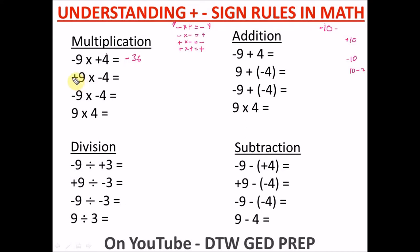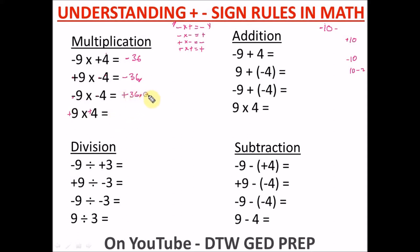So for minus 9 times positive 4: negative times positive gives us a negative, so the answer is negative 36. For positive 9 times negative 4: positive times negative gives a negative, so the answer is negative 36. For negative 9 times negative 4: negative times negative gives a positive, so the answer is positive 36. And positive 9 times positive 4 gives positive 36, which is the same as just 36.